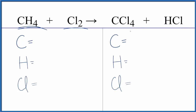For this reaction to take place, we need UV light to provide the energy to get the reaction started. So let's balance it. We have one carbon, four hydrogens, and two chlorine atoms on the reactant side. On the product side, we have one carbon, one hydrogen, and four chlorines.